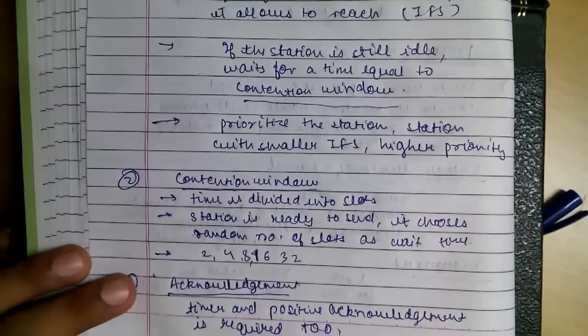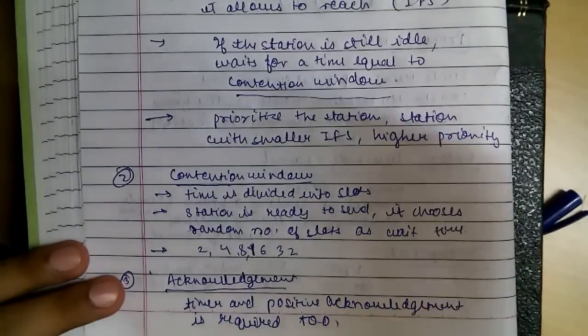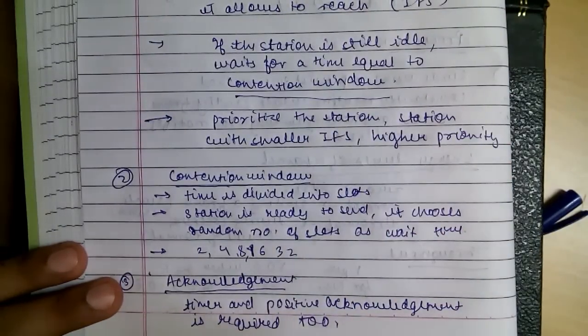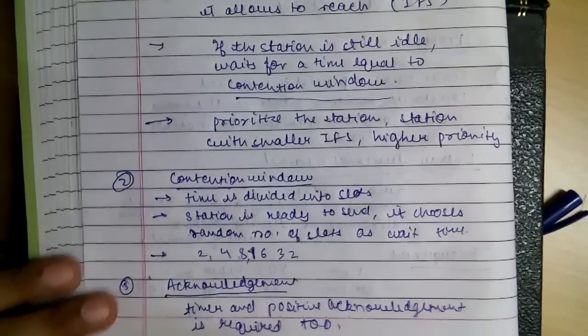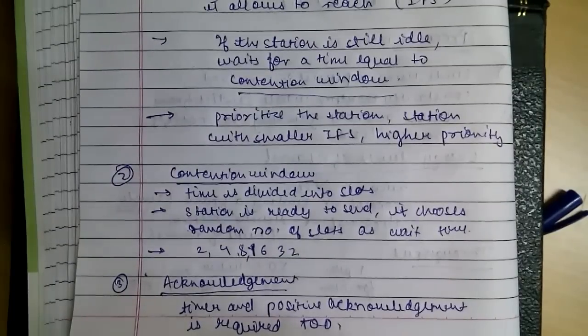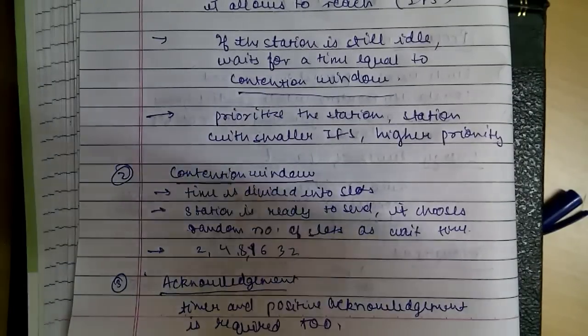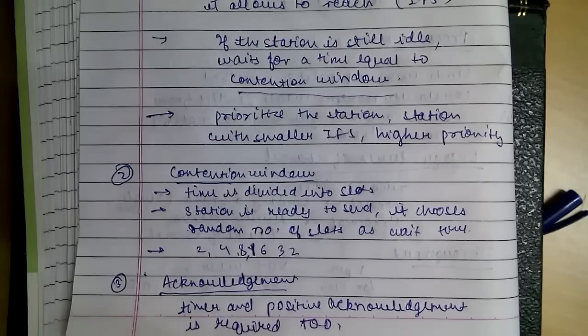So with this video we have finally covered all the methods in the random access methods. That was pure ALOHA, then slotted ALOHA, then CSMA carrier sense multiple access, then carrier sense with collision detection, and now this avoidance. So these are all the methods in the random access category.